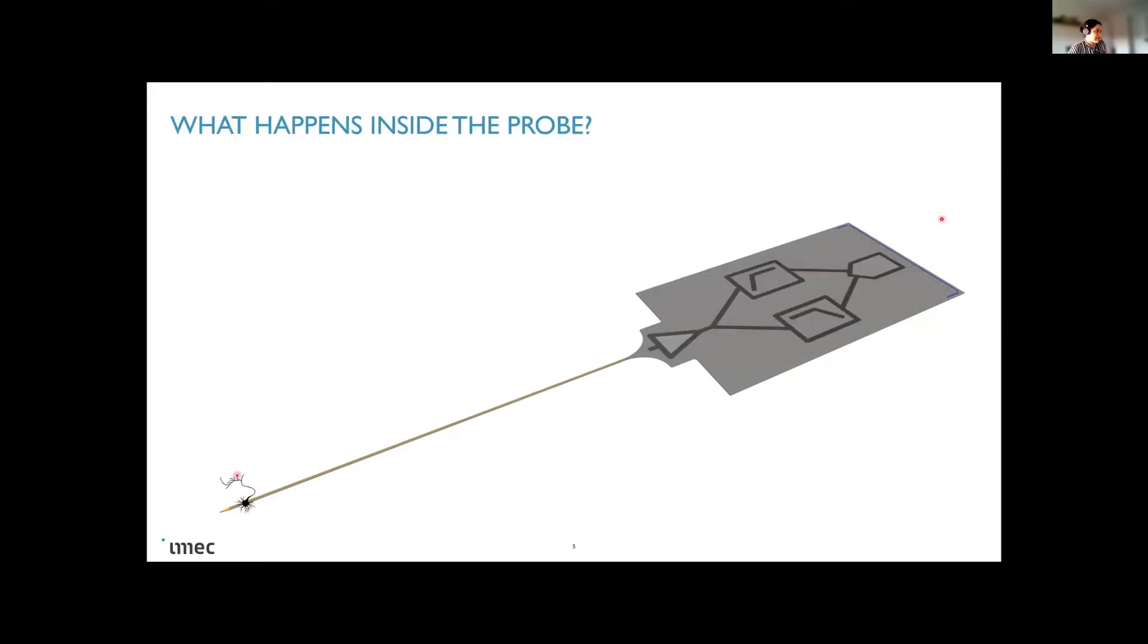So here in this cartoon, I represent this. What happens inside the probe is that the spikes are recorded as very small signals and they travel along the shank. In the base, the first step is a low noise amplification, where the most important goal here is to try to bring the signal a little bit larger so that they can be processed by the subsequent blocks. And this amplification is done at very low noise.